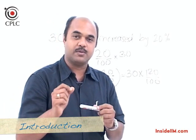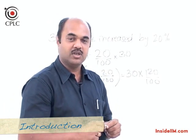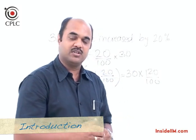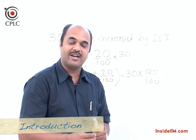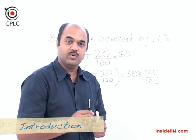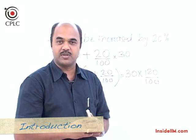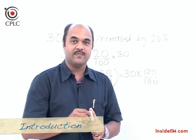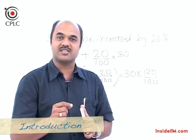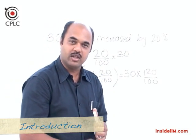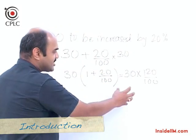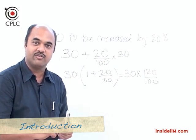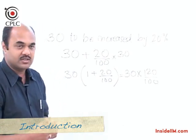Instead of increasing, if we want to decrease the number by 25 percent, we should find 75 percent of the number. So if we want to decrease a number by x percent, we find 100 minus x percent of the number. This can further be simplified by finding the fractional equivalent of the percentage increase.